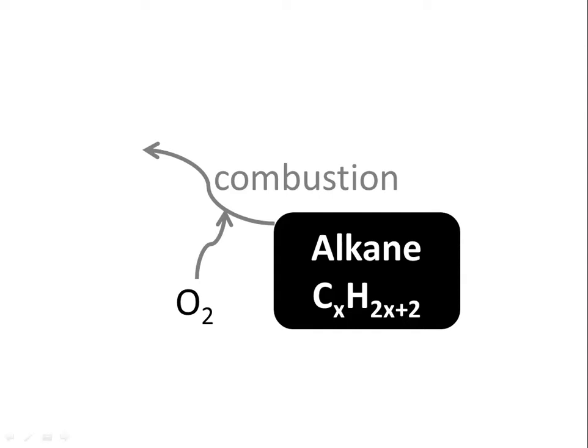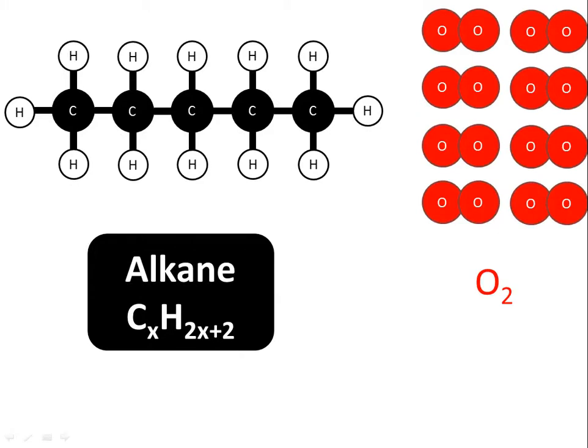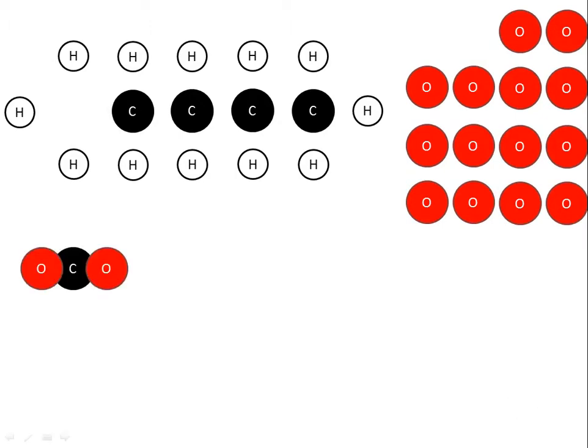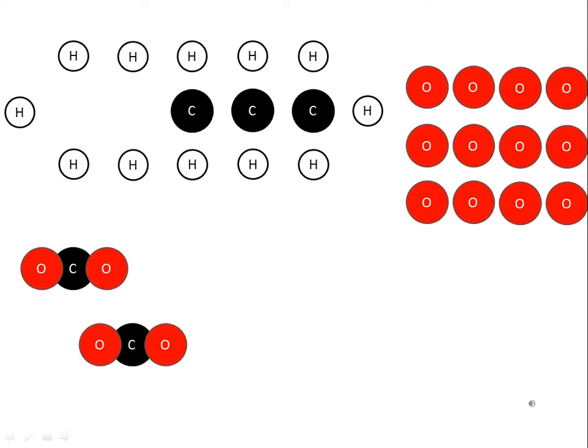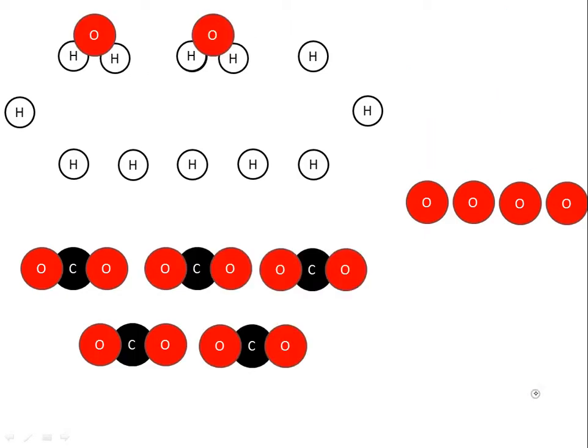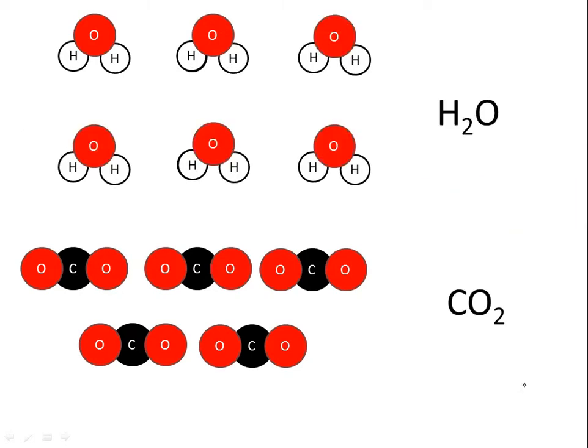What are the products of combustion of alkanes? Here we have an example of pentane reacting with oxygen. The bonds between the various atoms break, and then we get new combinations of compounds. The carbons react with oxygen to form carbon dioxide, and the hydrogen atoms that used to be part of the pentane react with oxygen to form water molecules.